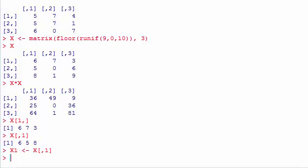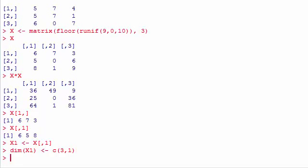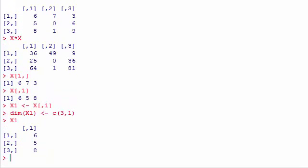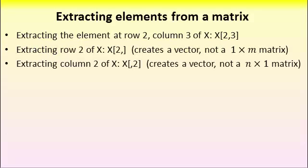To change X1 into a 3 by 1 matrix or a column vector, I use the dim command, the dim function. So I type dim X1 assign. And then I do the dimension inside the vector command. So I want it to be 3 by 1 like this. And now X1 is a column vector like we want it to be. Now X1 is a matrix and not a vector.